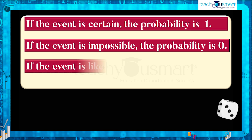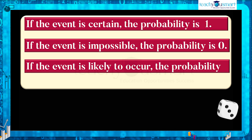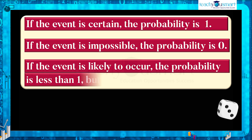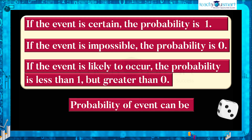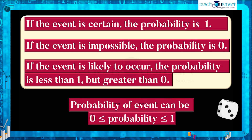If the event is likely to occur, the probability is less than one but greater than zero. Then we can say that the probability of an event satisfies: zero is less than or equal to probability, which is less than or equal to one.